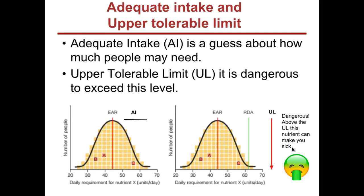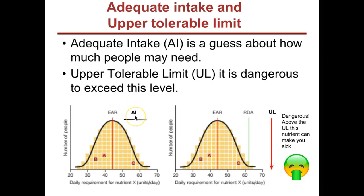Next, let's take a look at adequate intakes and upper tolerable limits. An adequate intake is related to the recommended dietary allowance, the RDA, but it's a little bit more fuzzy. An adequate intake is a guess by scientists about how much of a nutrient — Nutrient X in this case — is needed by the population. They don't know exactly what percentage of people this is sufficient for, but it's the best scientific guess available.